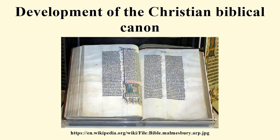When these bishops and councils spoke on the matter, however, they were not defining something new, but instead were ratifying what had already become the mind of the Church. Thus, from the 5th century onward, the Western Church was unanimous concerning the New Testament canon. The last book to be accepted universally was the Book of Revelation, though with time all the Eastern Church also agreed. Thus, by the 5th century, both the Western and Eastern Churches had come into agreement on the matter of the New Testament canon.